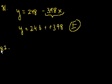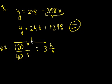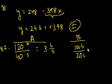Problem 82. Machine A produces bolts at a uniform rate of 120 bolts every 40 seconds. That's the same as 3 bolts per second. And machine B produces bolts at a uniform rate of 100 bolts every 20 seconds. That's equal to 5 bolts per second.